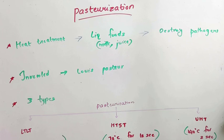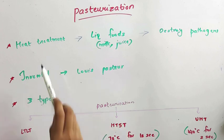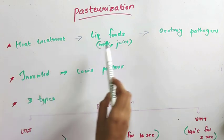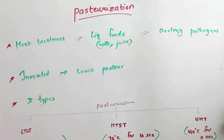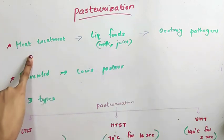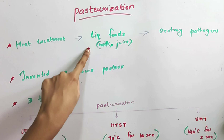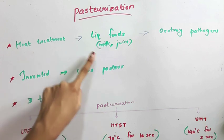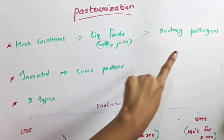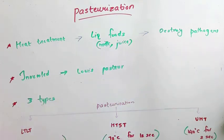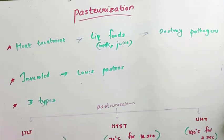Today we are going to study the topic of pasteurization. Pasteurization is a heat treatment that is applied to liquid foods like milk, juices, etc., in order to destroy the pathogens present in it. It is important to eliminate pathogens from our food before we consume it, otherwise we will be affected by a number of diseases.